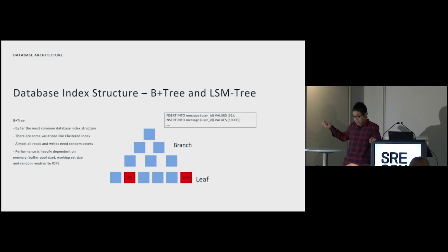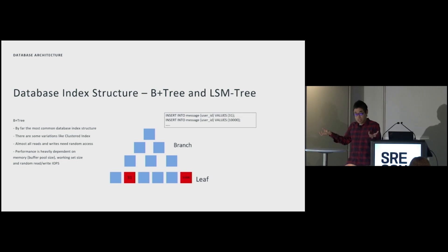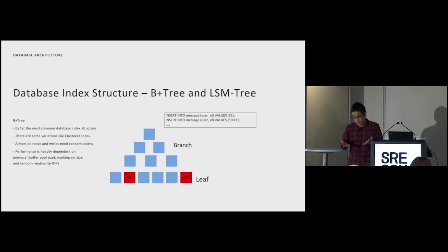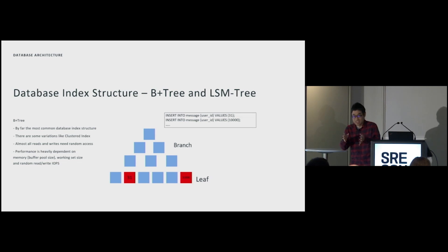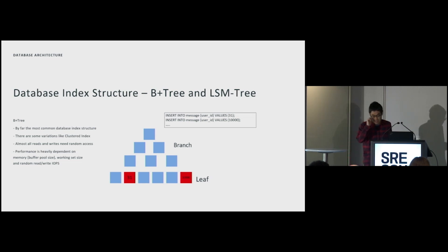For example, a message table with a user ID index storing user ID 31 and 10,000 — the data is ordered by the index, so 31 is at the very first position and 10,000 is further along. This means each data record is stored in different blocks. To insert or modify data, you have to read the block — a random read — and then write it back. Almost all accesses are random reads, which is relatively slow for hard disk drives. Back in the days when SSDs were not common, databases running on hard disk drives were very slow and needed a large memory cache. Nowadays SSDs are the majority for online databases, so this is much better for B-trees.